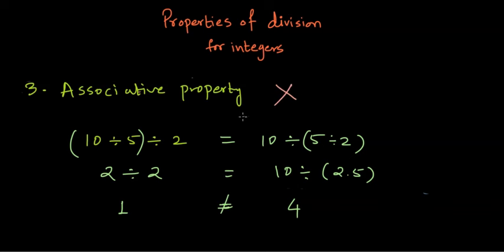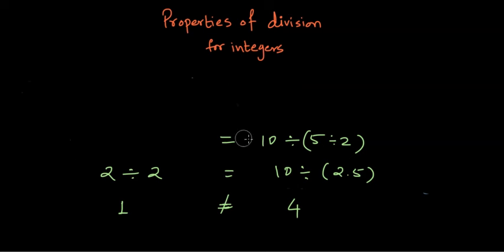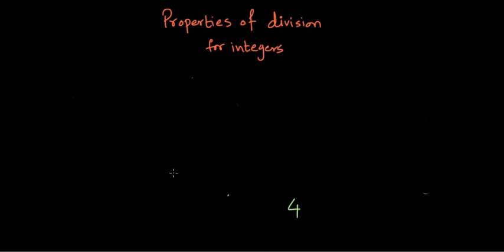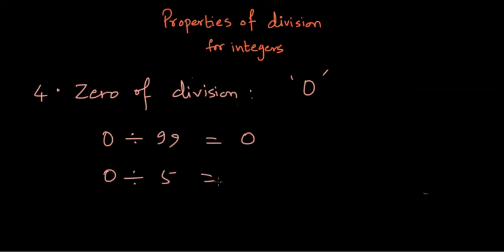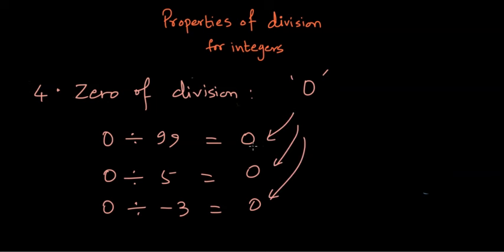So we can say that division is not associative for integers either. Now let's look at some special numbers for division. The first special number is the zero of division. Zero of division is a number which, when divided by any integer, always gives 0. That number is 0 itself — because 0 divided by any number, say 99, 5, or minus 3, will always give 0.